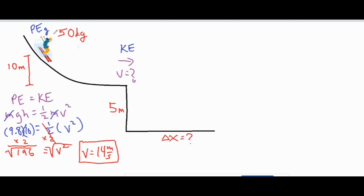Now we're done analyzing the skier on the hill. At the bottom of the hill, we know their velocity is 14 meters per second, and it turns into a projectile motion question.